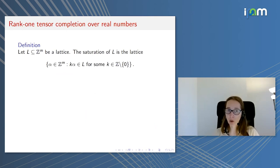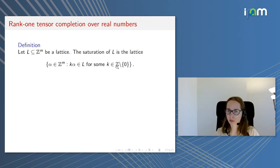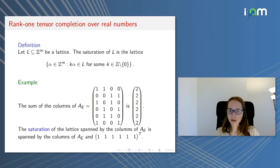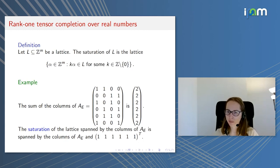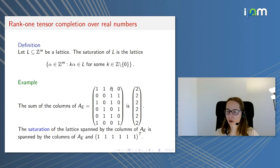One more definition: let L be a lattice in Z^M. The saturation of L is the lattice of all alpha in Z^M such that k times alpha is in L for some non-zero integer k. For example, consider the lattice spanned by the columns of AE — all integer combinations of those columns. The vector (2,2,2,2,2) is in this lattice, which means the vector (1,1,1,1,1) is in the saturation because two times it is in the original lattice. The saturation in this case is generated by this matrix and the vector of ones.